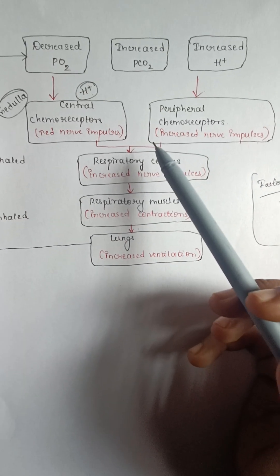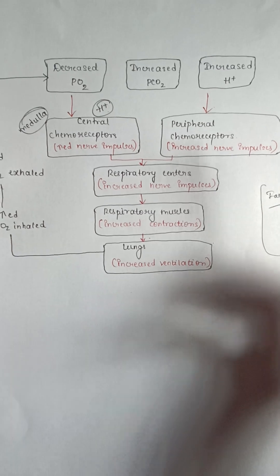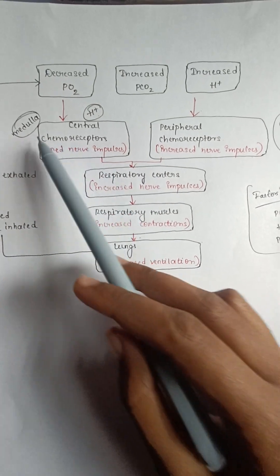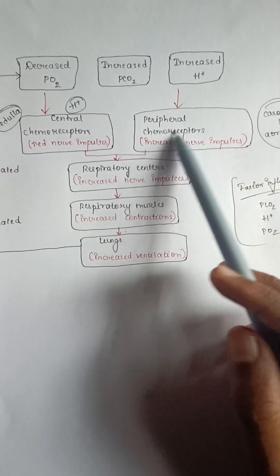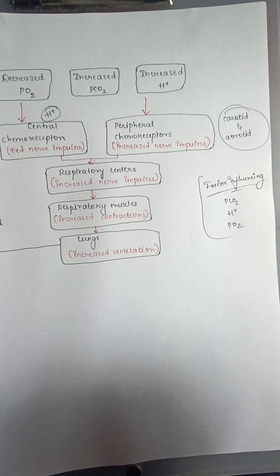Here we are learning about chemical regulation of respiration. The chemoreceptors are mainly of two types: central chemoreceptors, which are present in the medulla, and the peripheral chemoreceptors, which are present in carotid and aortic bodies.